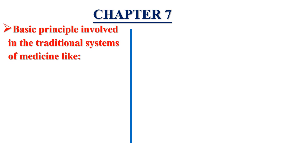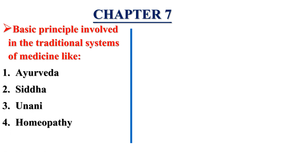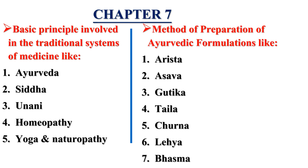Chapter seven is divided into two parts. The first part covers the basic principles involved in the traditional systems of medicines like Ayurveda, Siddha, Yunani, Homeopathy, Yoga, and Naturopathy. The second part is related to Ayurvedic formulations — the methods of preparation of formulations like Arista, Asava, Gutika, Taila, Churna, Leha, and Bhasma. This chapter is mainly about traditional systems of medicines and their Ayurvedic formulations.